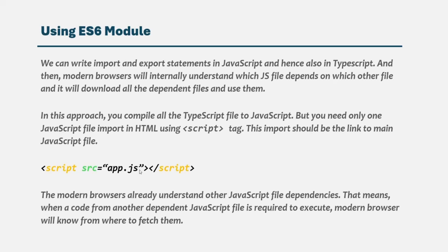So there are two main approaches using which we can organize our TypeScript code. One by using namespaces, which is a TypeScript feature and is not available in JavaScript. And one by using ES6 modules, which is also available in modern JavaScript and hence in TypeScript. In this section, we will learn about the namespace approach as well as the ES6 module approach for organizing our code. Let's start with namespaces in our next lecture. If you have any questions, feel free to ask. Thank you for listening and have a great day.